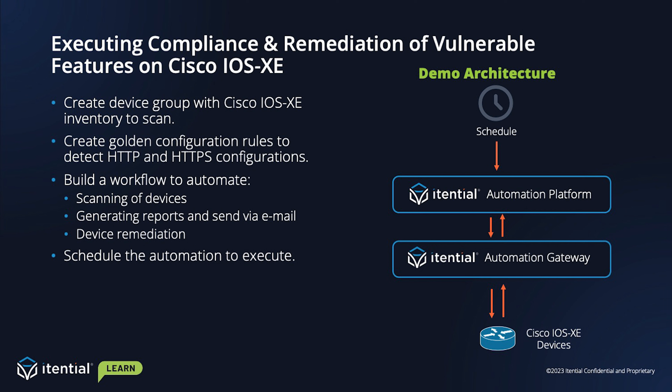For the demo architecture, we will be using the automation platform to create the configuration compliance activities, as well as an automation that can be used to execute the configuration compliance job, scan the network, and also perform remediation activities. The automation gateway will be responsible for talking to the Cisco IOS 6E devices. Lastly, we're going to be creating an automation trigger in Operations Manager to set a schedule to run these activities on a daily basis.